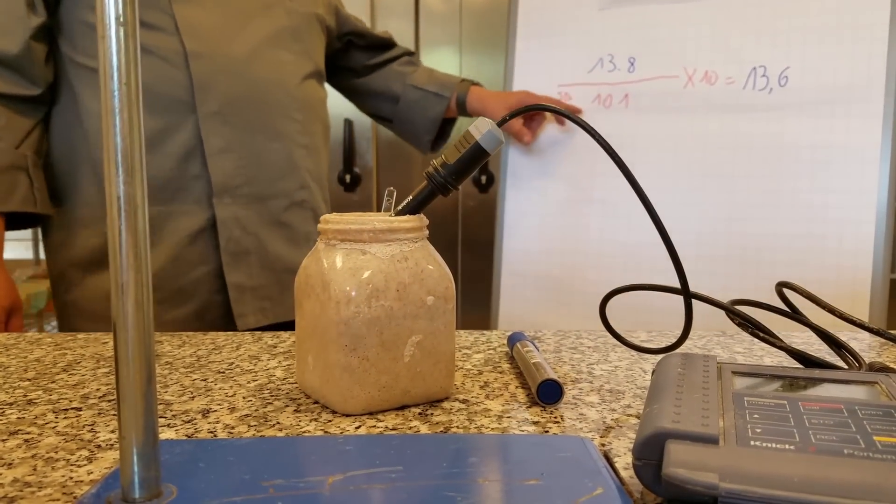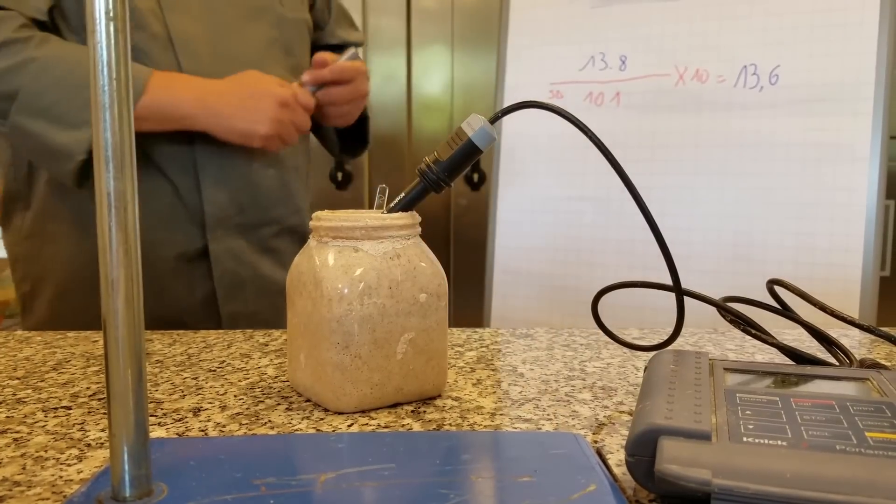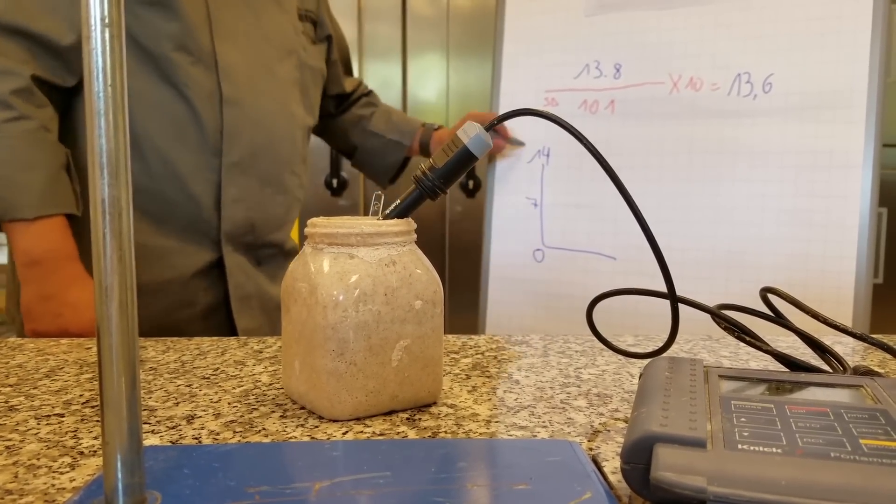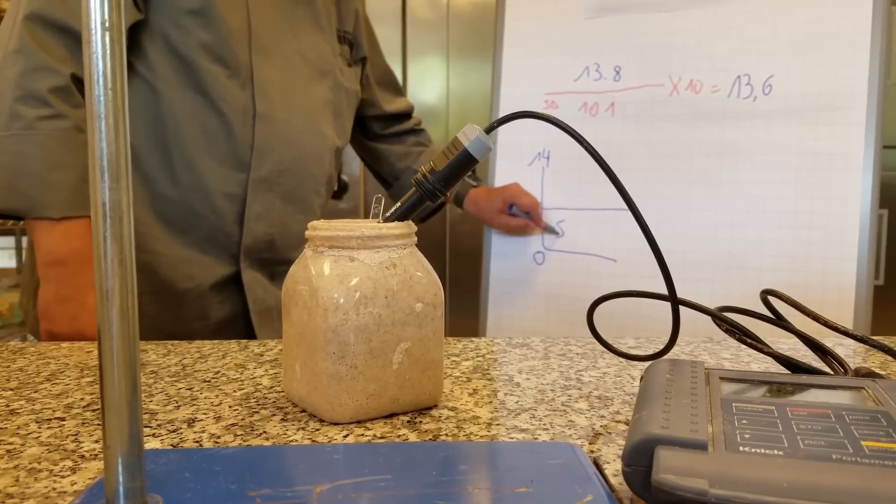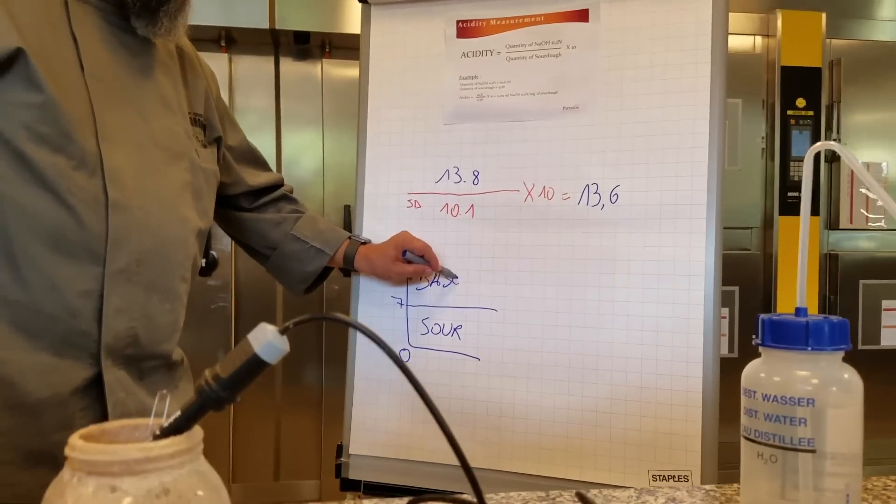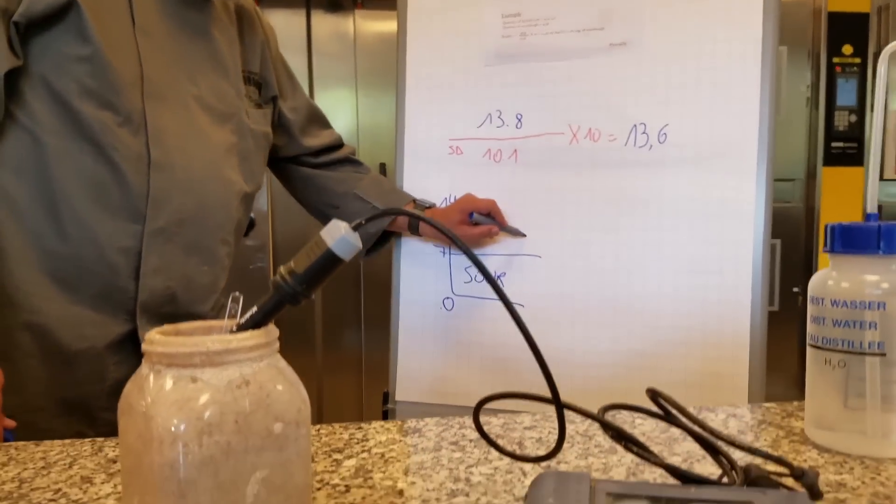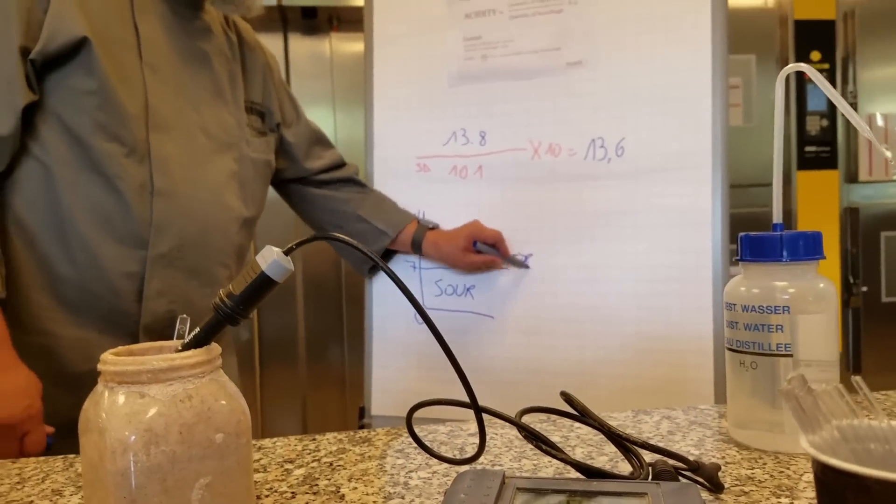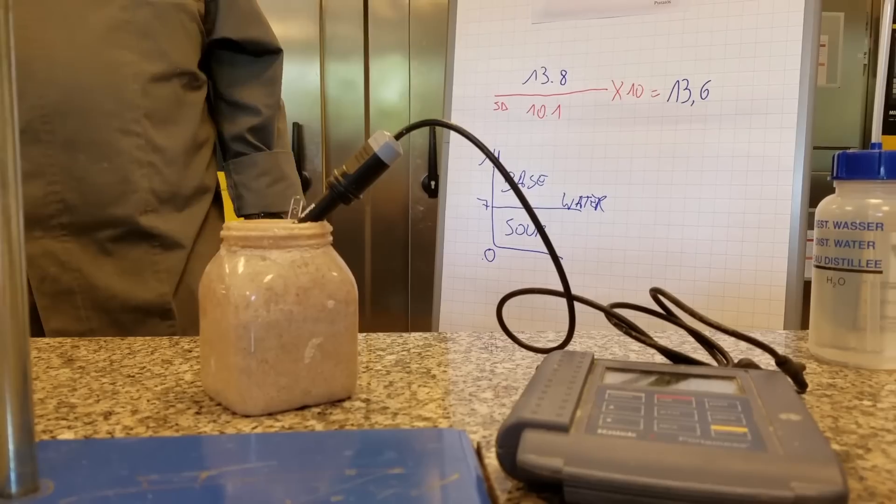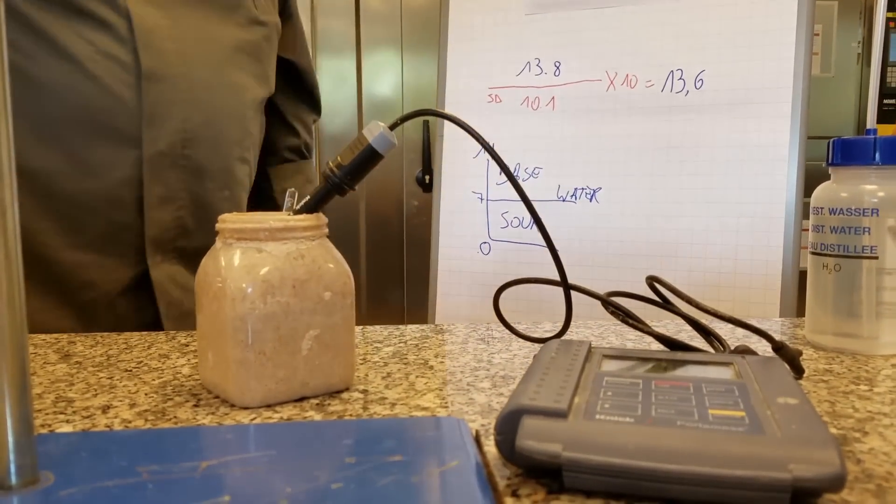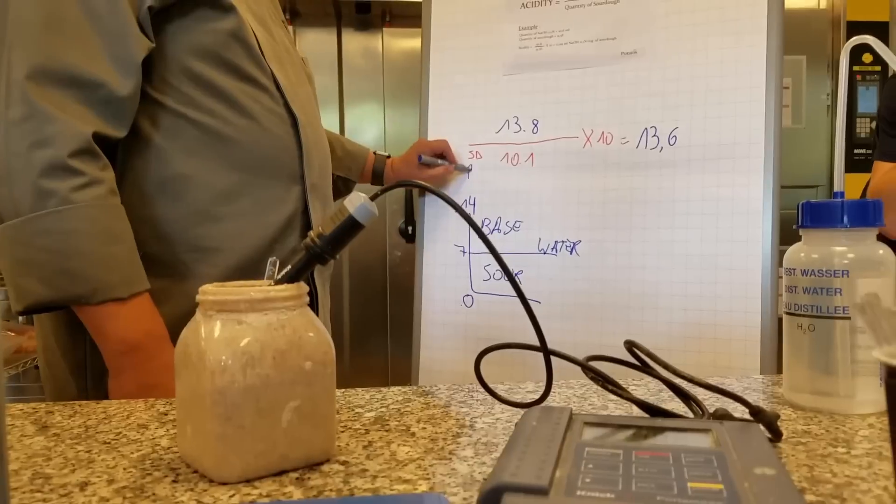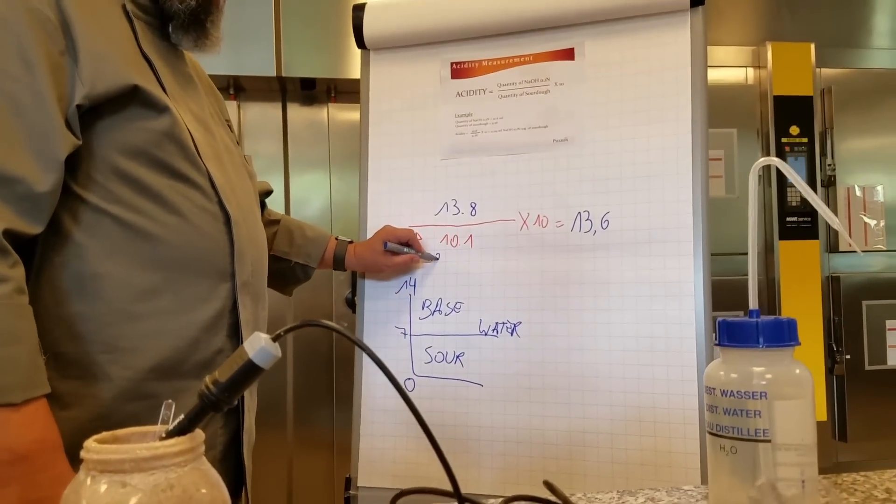How higher pH? pH is a scale from 0 to 14. Everything that is below is sour, everything that is above is base, and water is 7 approximately.